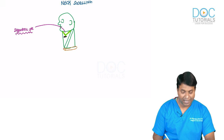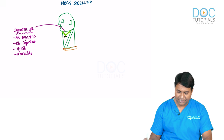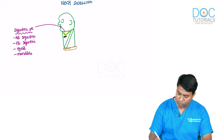The digastric triangle is also known as the submandibular triangle, bounded by the anterior belly and posterior belly of digastric, with the hyoid bone as the apex and the mandible forming the base. It is the classical digastric triangle.